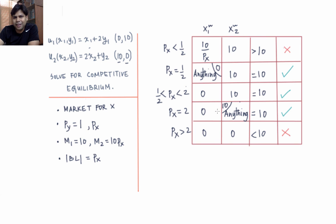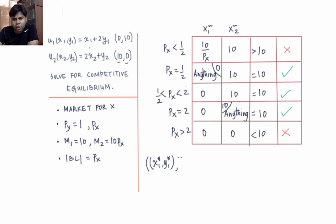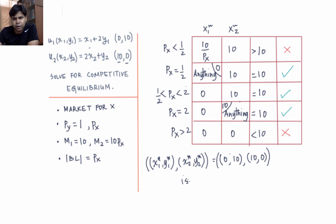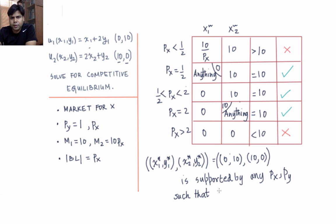The competitive equilibrium prices are any px between 1/2 and 2, and the allocation that supports competitive equilibrium is: individual 1 consuming 0 units of x and 10 units of y, individual 2 consuming 10 units of x and 0 units of y. Formally, the allocation (x1*, y1*, x2*, y2*) = (0, 10, 10, 0) is supported by any (px, py) such that px is between 1/2 and 2, and py equals 1.